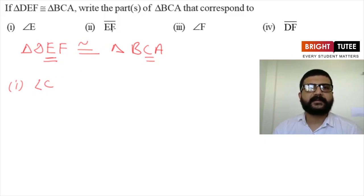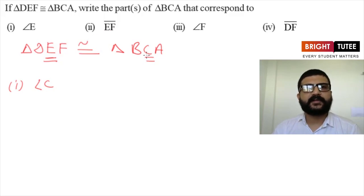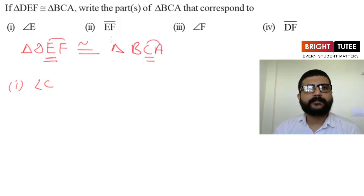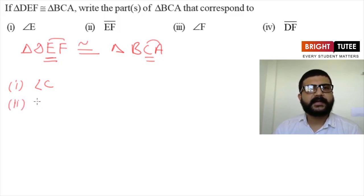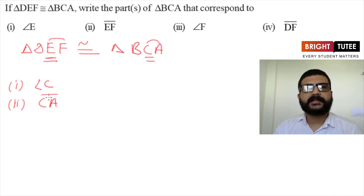The second part: side EF — which side of triangle BCA corresponds to EF? From the correspondence, EF corresponds to CA of triangle BCA. So the answer to the second question is line segment CA.